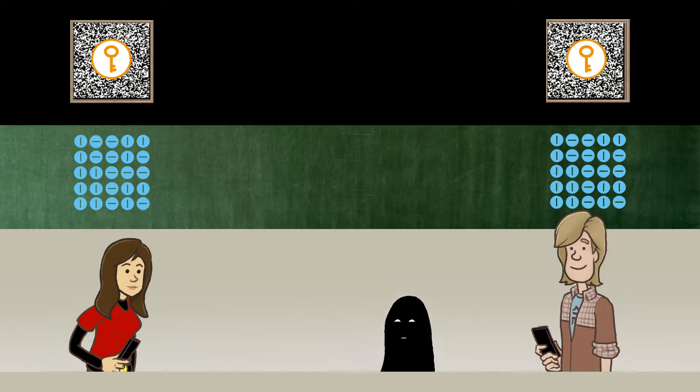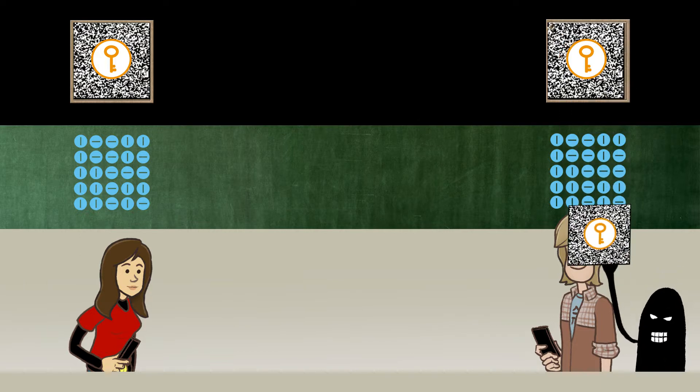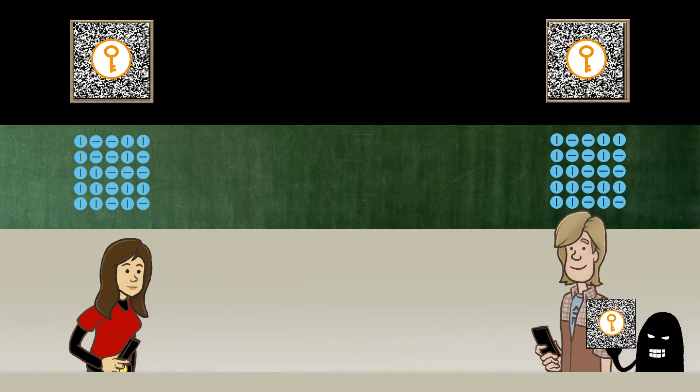There is, however, no absolute certainty. Because if the key is stored digitally on Bob's PC, the quantum channel no longer helps. So the cat-and-mouse game starts all over again.